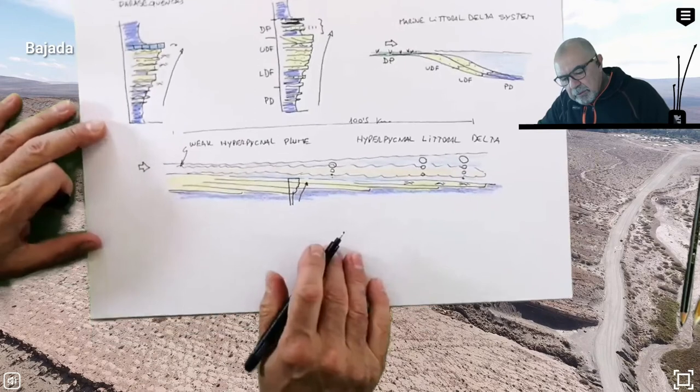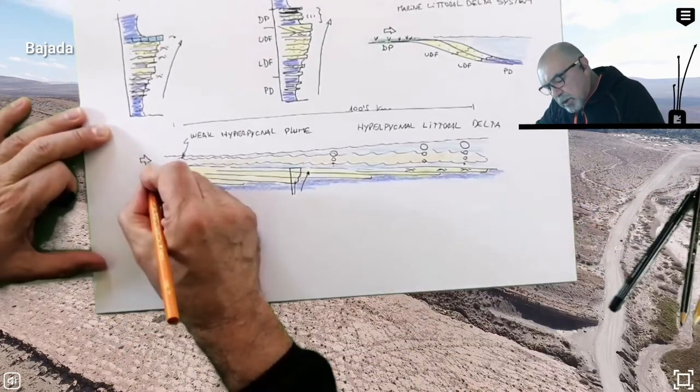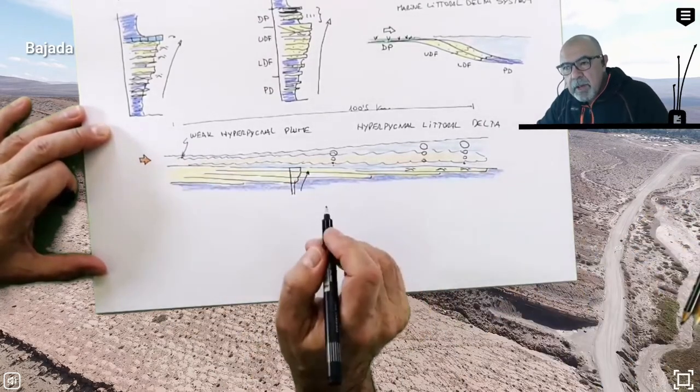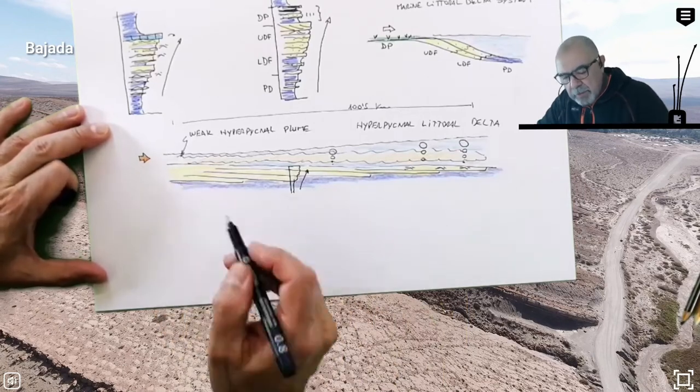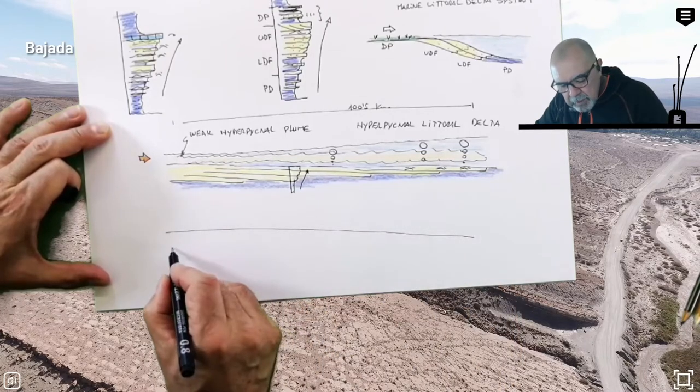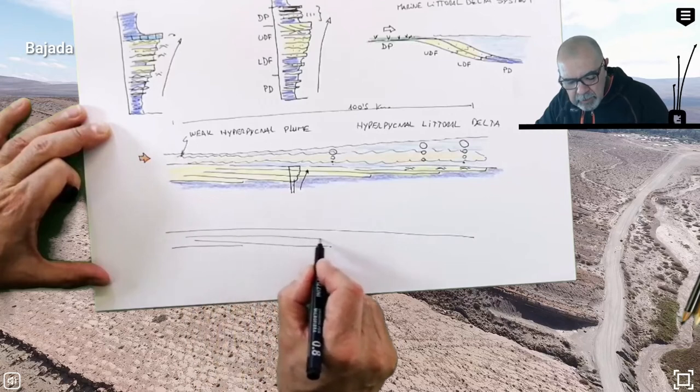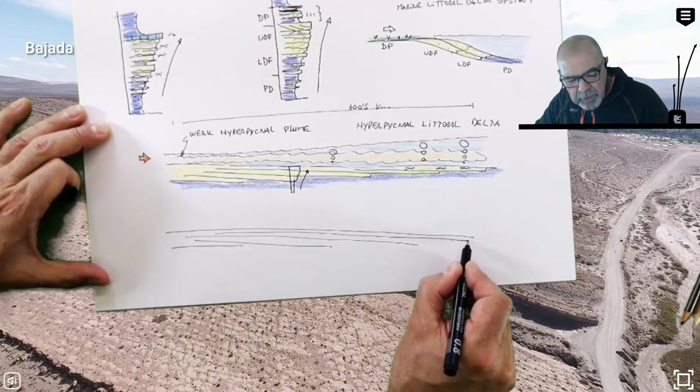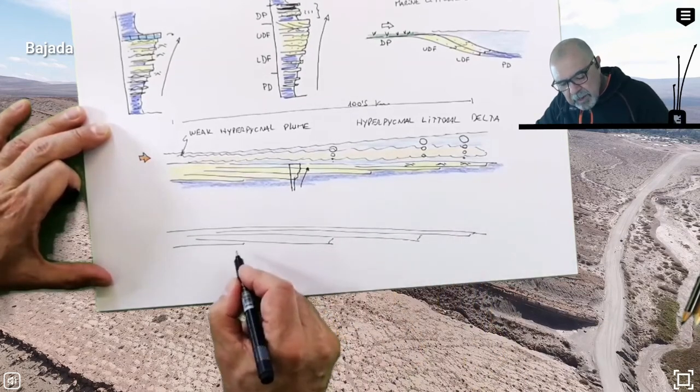So in this situation you can have this wedge of clastic system that can extend hundreds of kilometers basin-ward. At the end, when the sediment supply stops or you have an allocyclic control in sedimentation and sediment supply...